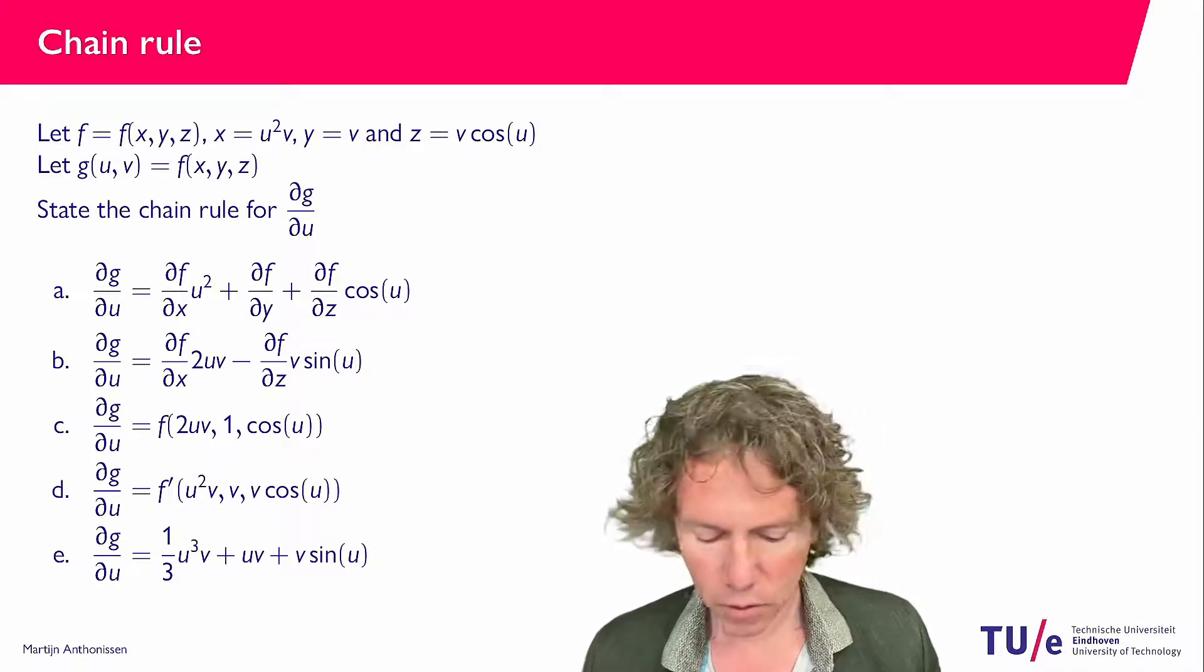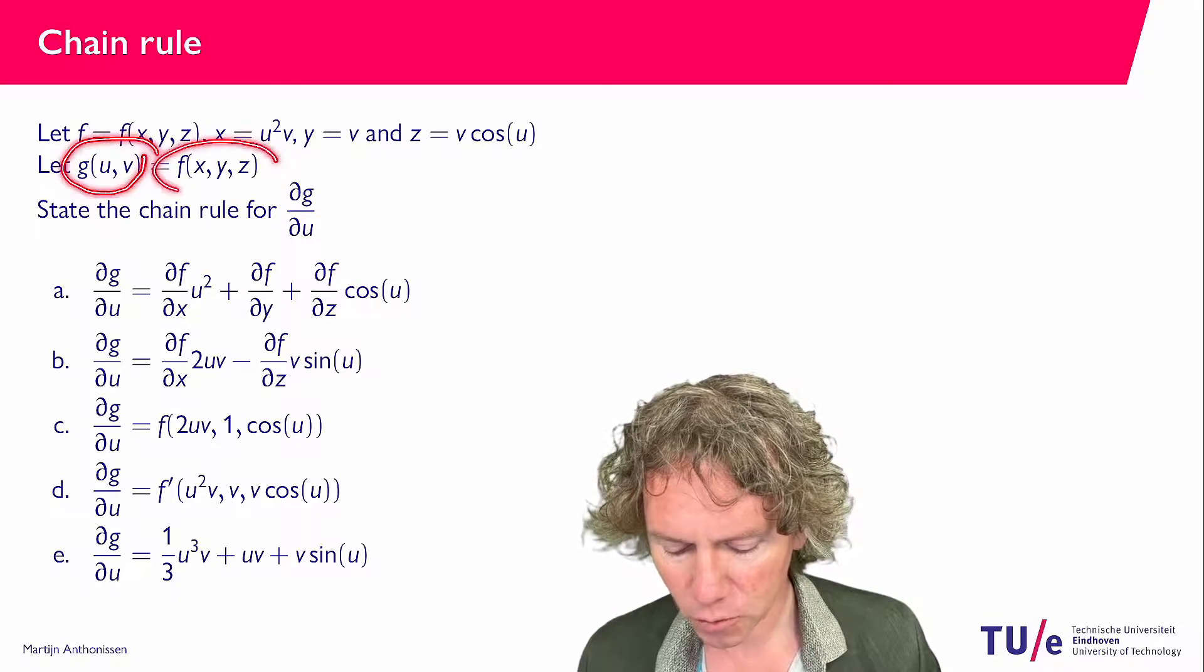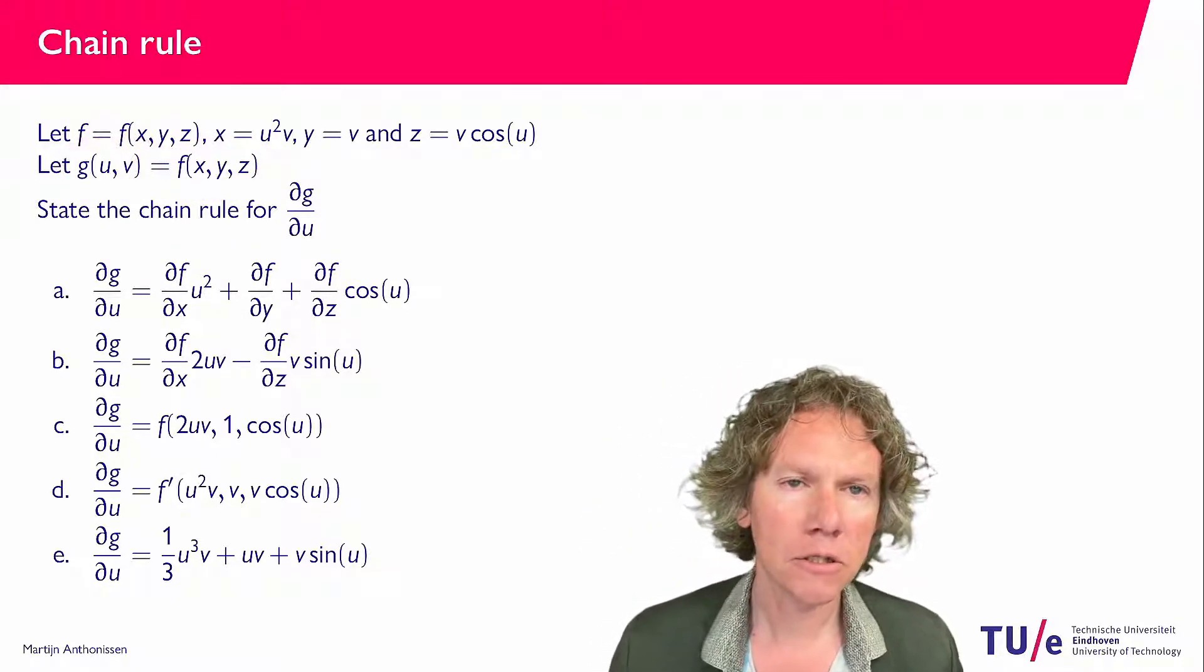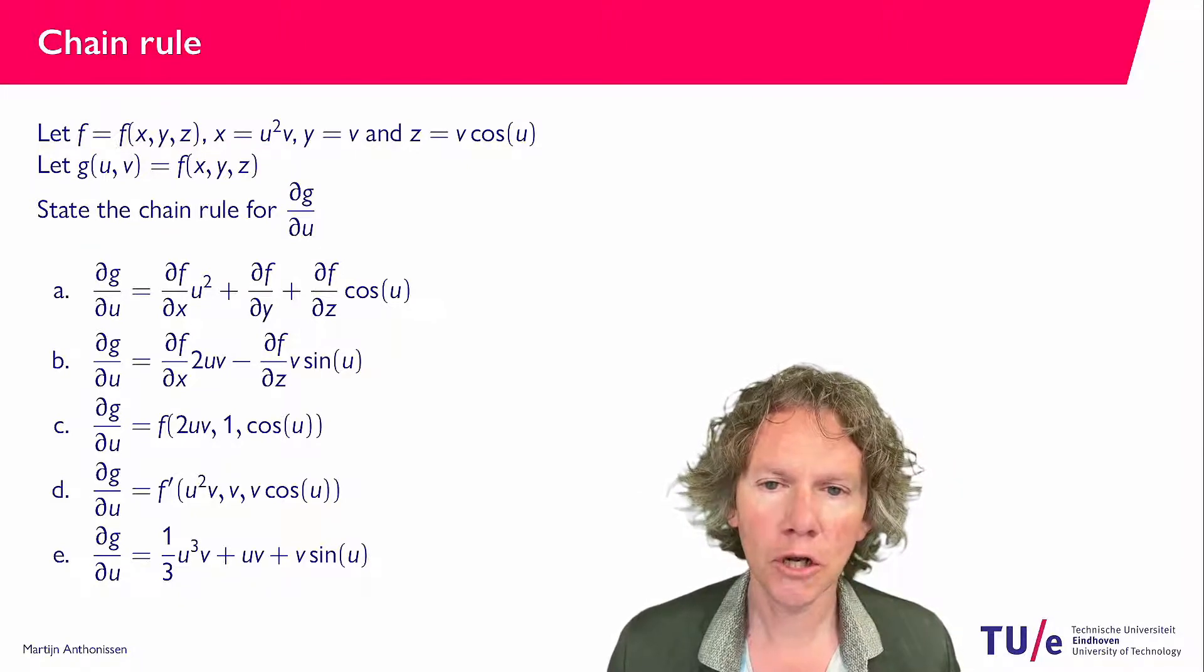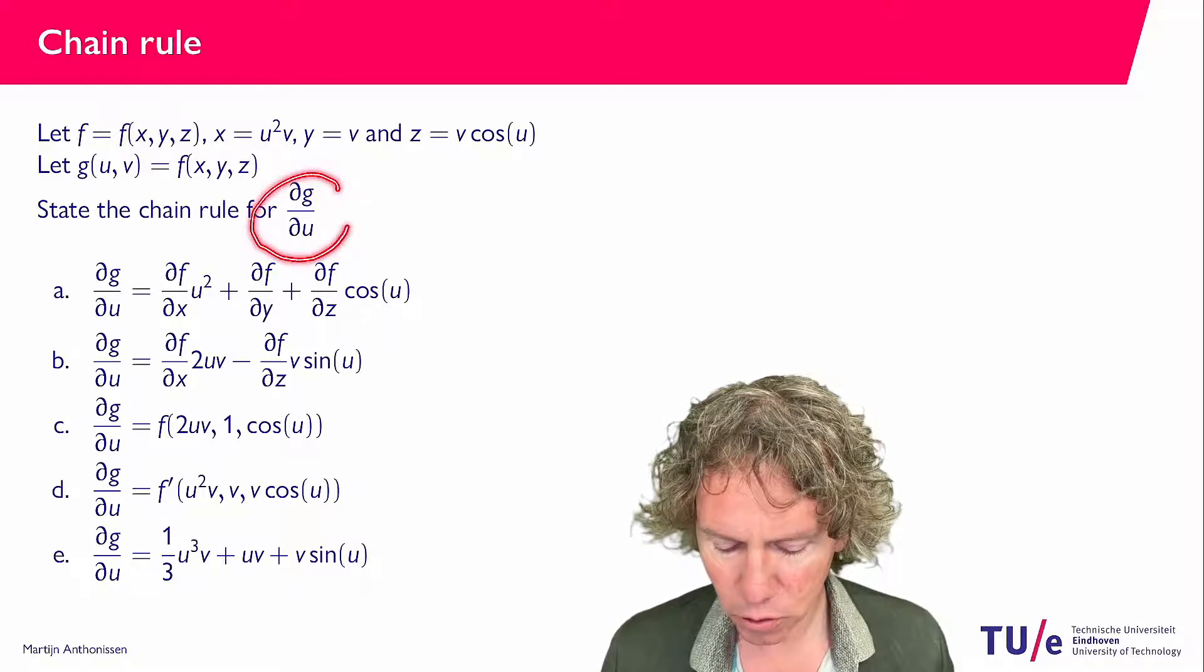Now g of u and v is f of x, y, z, and we are being asked to find the chain rule for the partial derivative of g with respect to u.